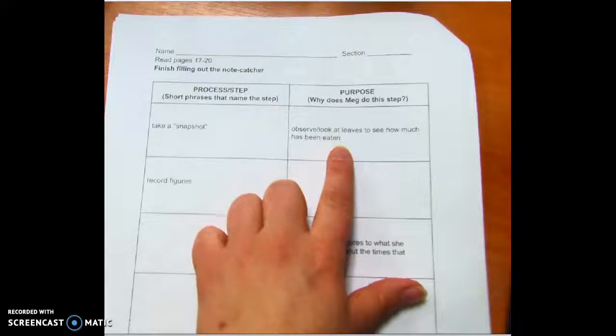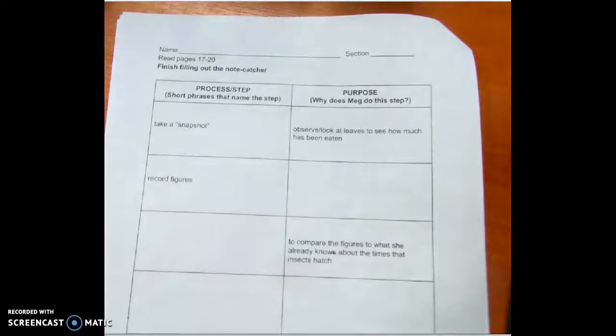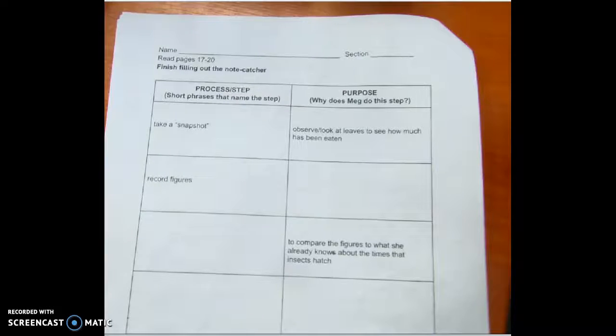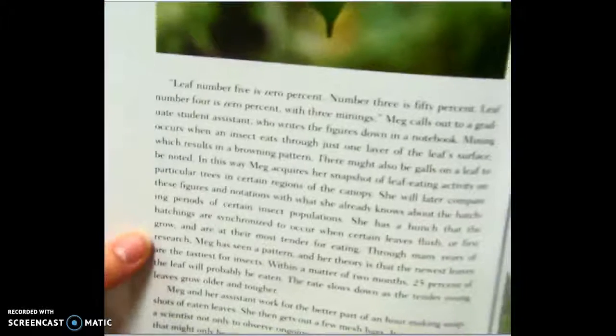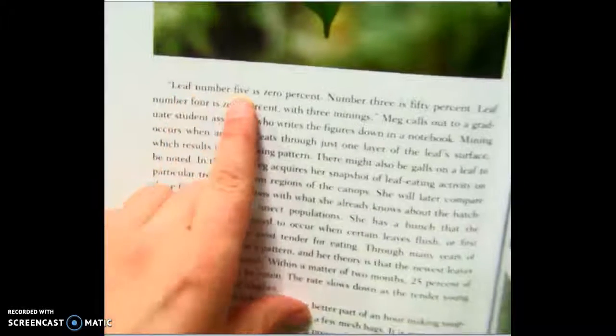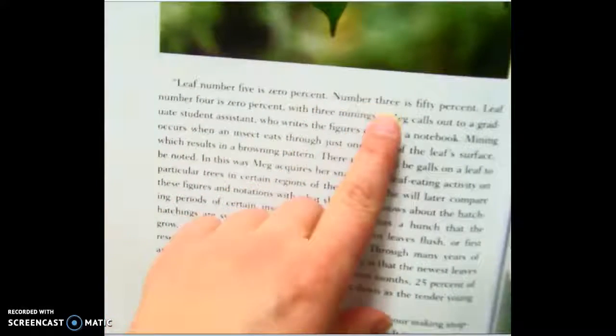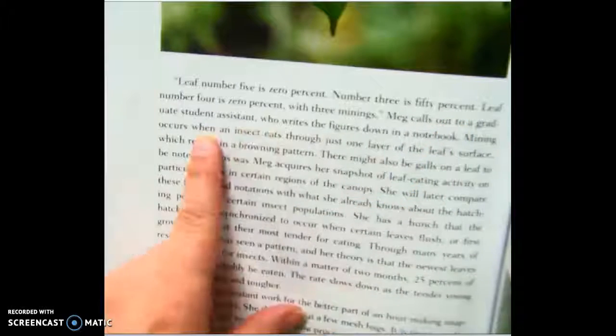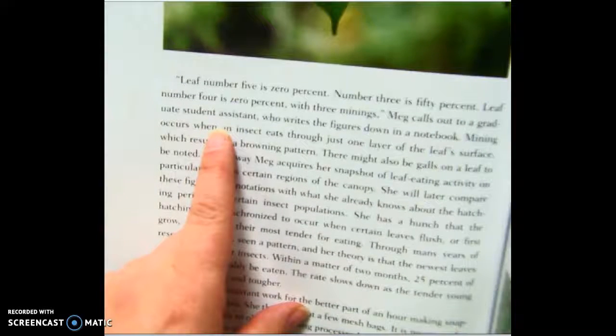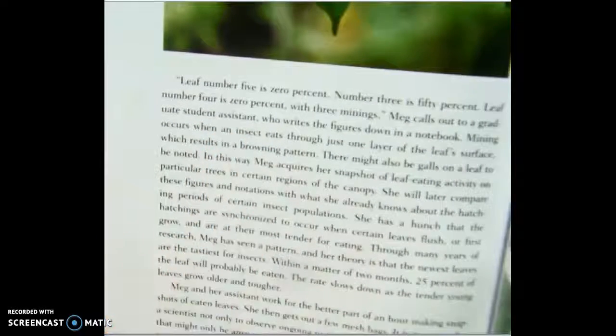Observation, look at leaves to see how much has been eaten. Now we have record figures. We look at the top of the page, leaf number five is zero percent, leaf number three is fifty percent, leaf number four is zero percent with reminders. She's calling out to a grad assistant who's writing down the figures.